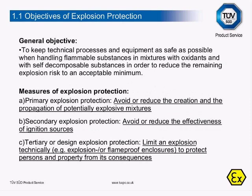The General Objective is to keep technical processes and equipment as safe as possible when handling flammable substances in mixtures with oxidants and self-decomposable substances, in order to reduce the remaining explosion risk to an acceptable minimum. The Measures of Explosion Protection include Primary Explosion Protection: avoid or reduce the creation and propagation of potentially explosive mixtures. Secondary Explosion Protection: avoid or reduce the effectiveness of ignition sources. And Tertiary or Design Explosion Protection: limit an explosion technically via explosion flame-proof enclosures to protect persons and property from its consequences.